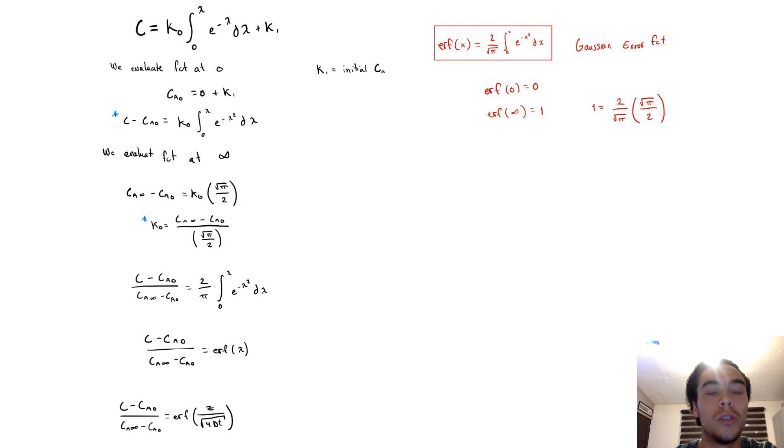Now we evaluate our general solution at zero, and we obtain that k₁ is going to be our initial concentration. Then we evaluate that function at infinity and we obtain this following equation.